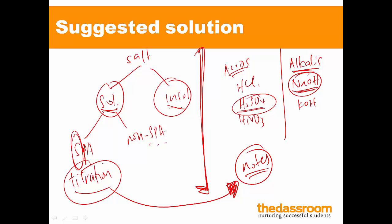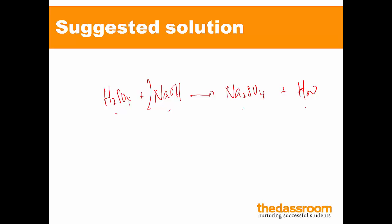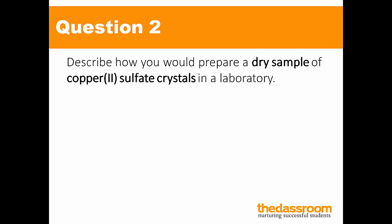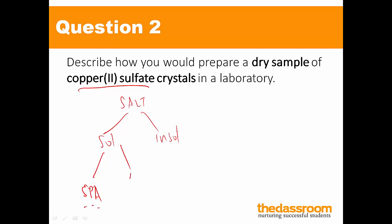Without further ado, we carry on to question 2: describe how do you prepare a pure dry sample of copper-2-sulfate crystals? Same thing — this is a salt preparation question. Very quickly draw out the flowchart. Ask yourself if the salt is soluble or insoluble using the solubility table. If it's a soluble salt, check if it's a SPAR — sodium, potassium, ammonium — or a non-SPAR salt. In this case, copper-2-sulfate is a soluble salt and it's a non-SPAR salt.